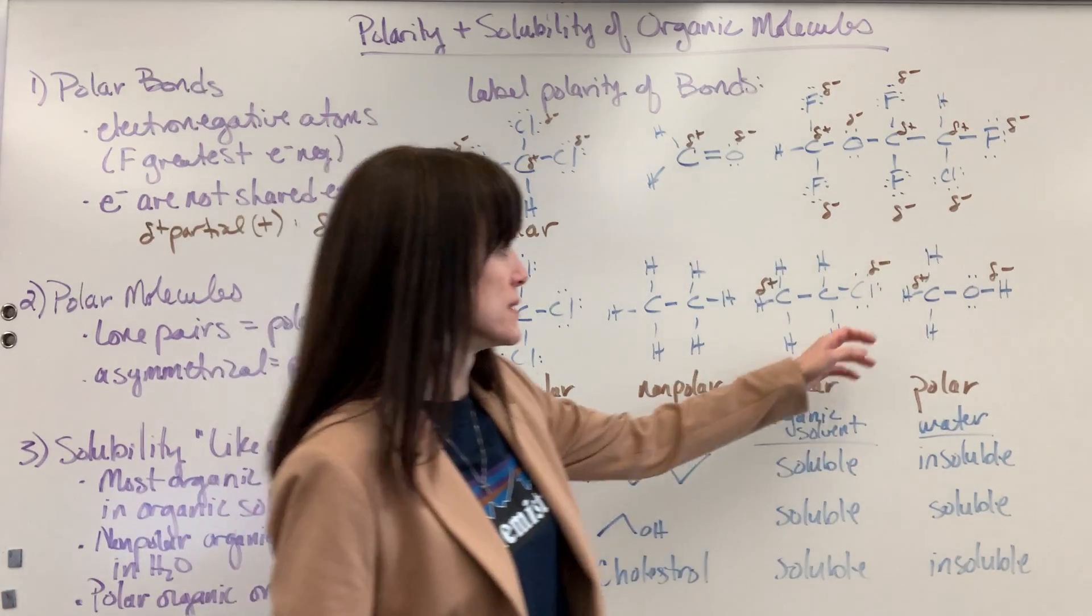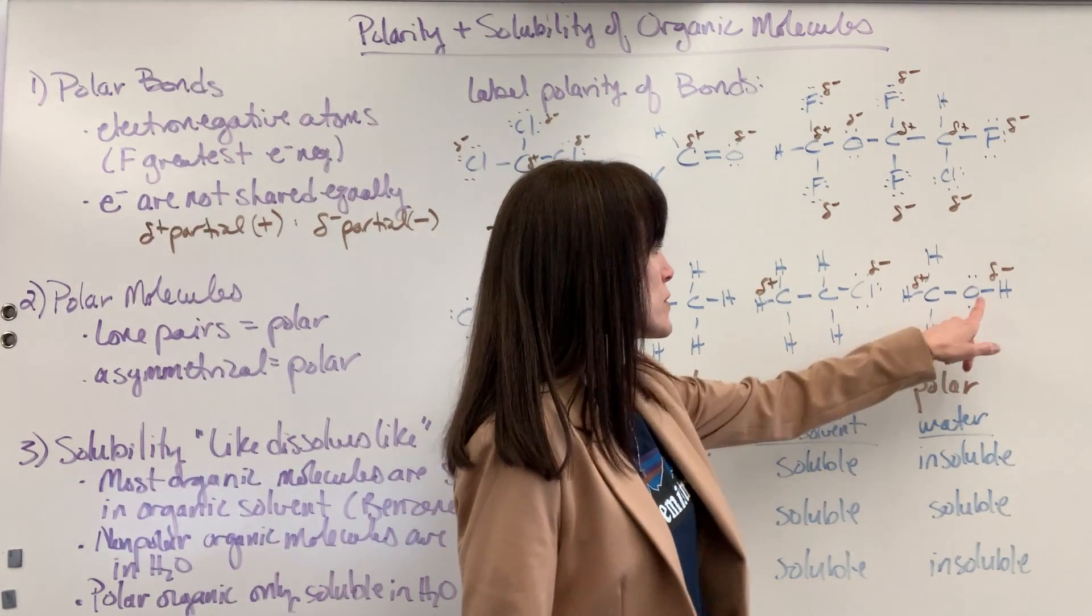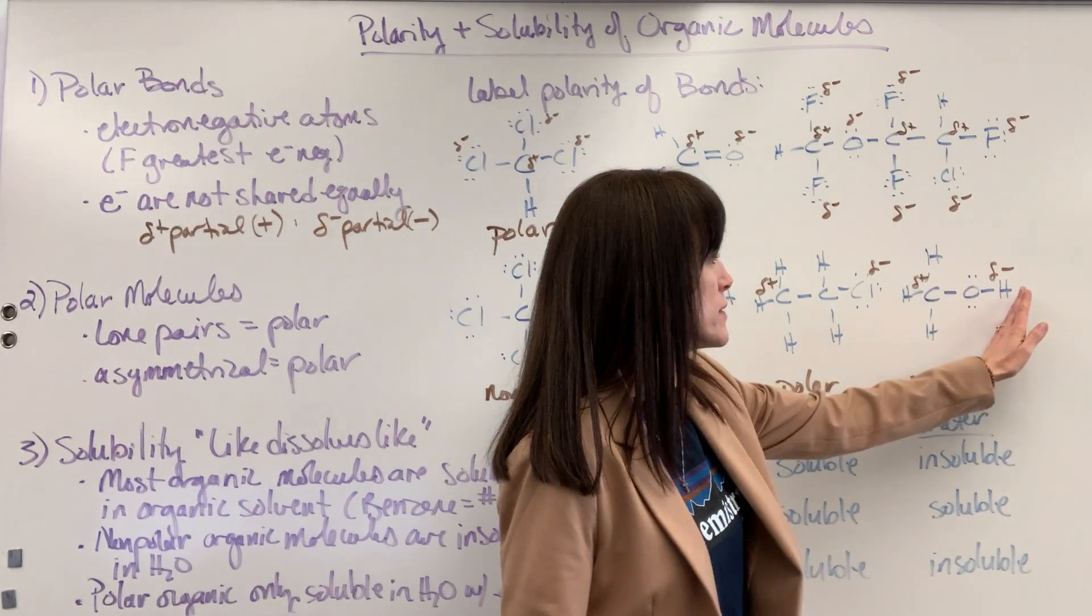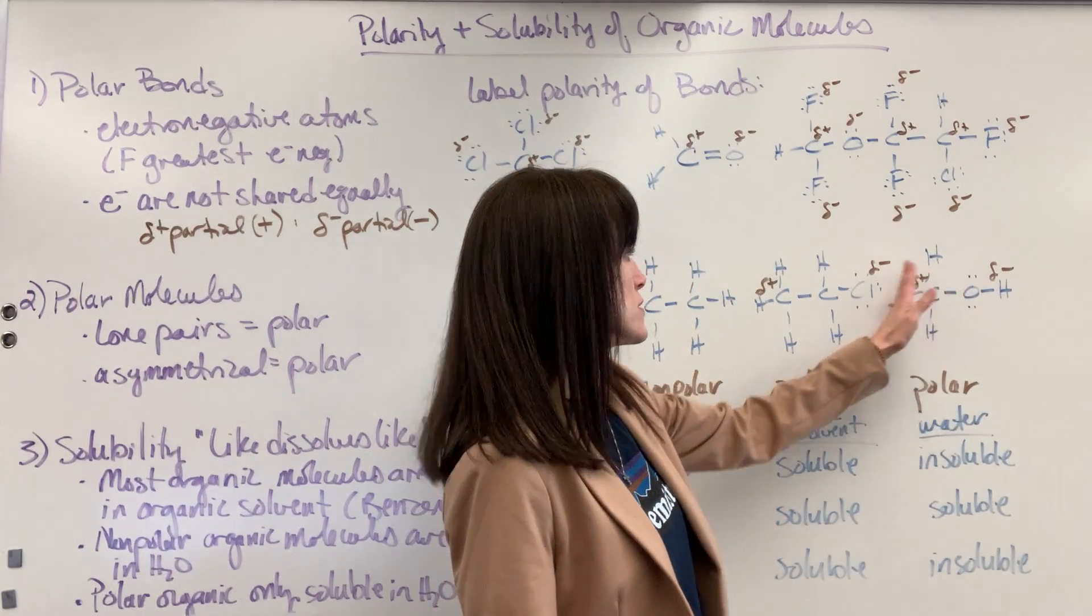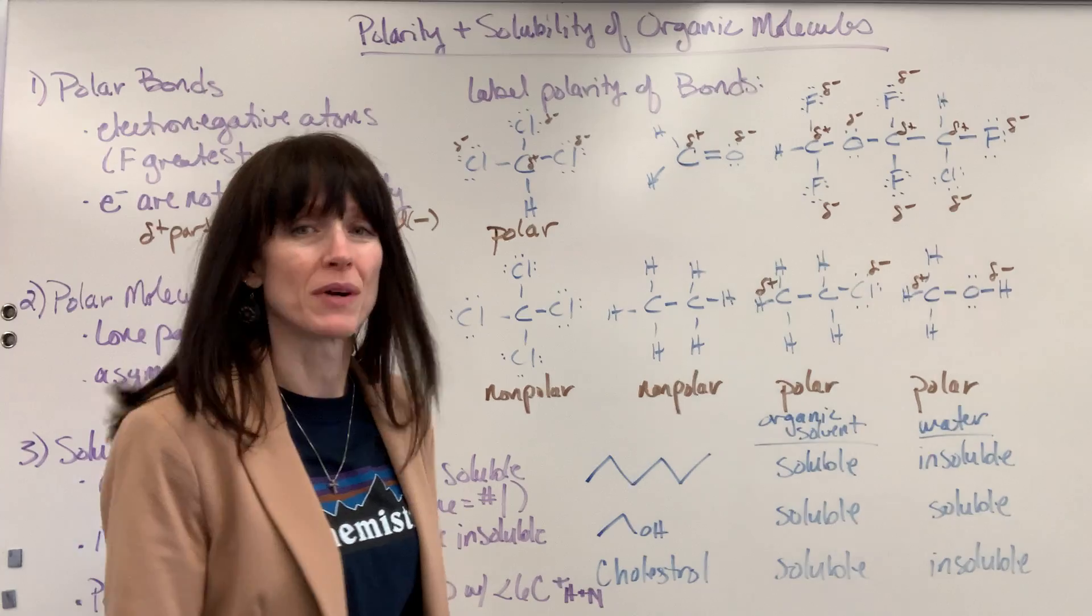Another example, this is an alcohol. So with that oxygen, it's going to make this part of the molecule partial negative. So by default, this part of the molecule will be the partial positive.